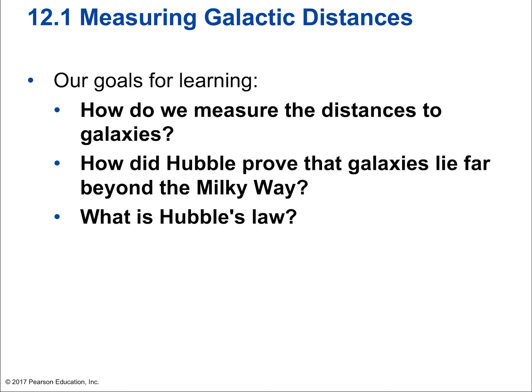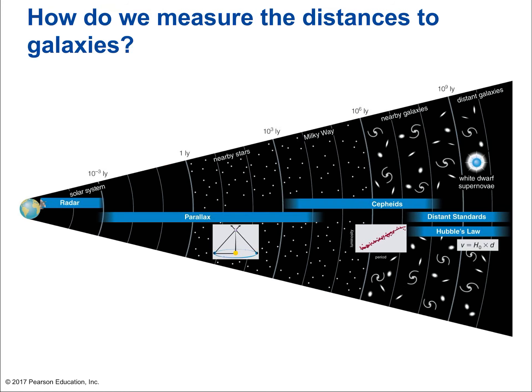In our first section, we have goals of understanding how we measure the distances to galaxies, how Hubble proved that galaxies lie far beyond the Milky Way, and what Hubble's law is. Measuring distances to galaxies is a multi-step process. The whole story involves going from radar to parallax, to variable stars called Cepheid variables, and then finally looking at white dwarf supernovas as the most common type of distance standard, because white dwarf supernovas always release the same amount of energy.